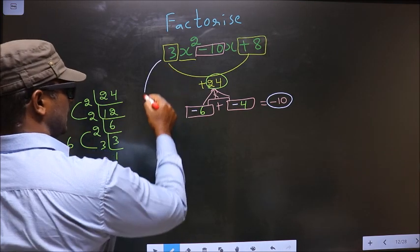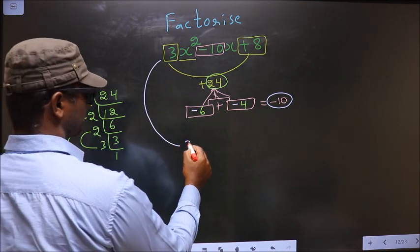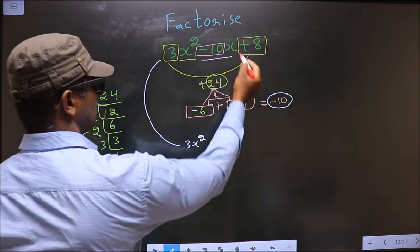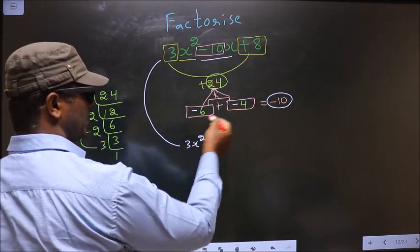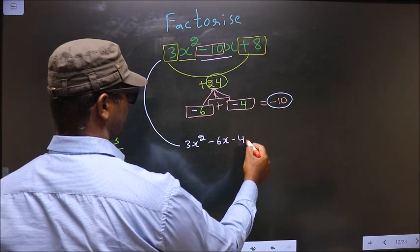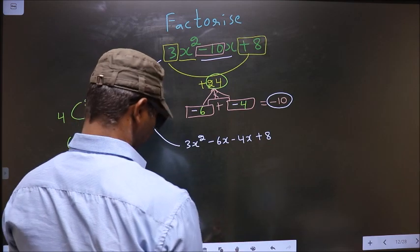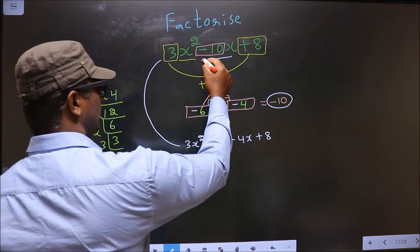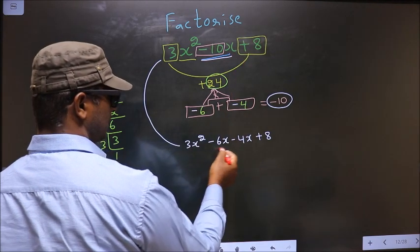Now we should change this to 3x square. In place of minus 10x, now you should be writing this: that is minus 6x minus 4x plus 8. In place of minus 10x I have written this.